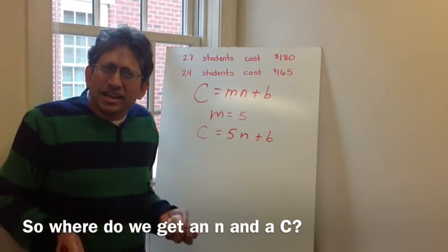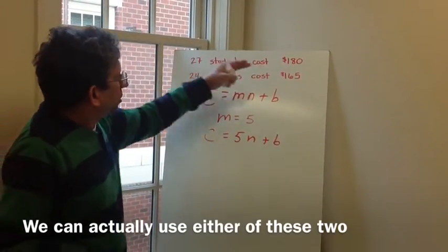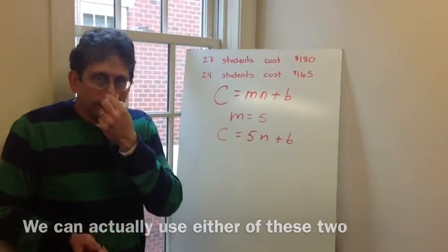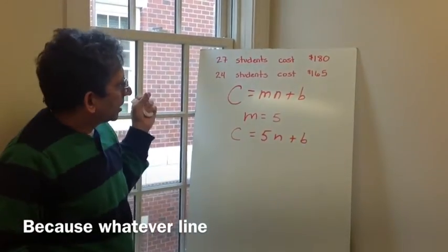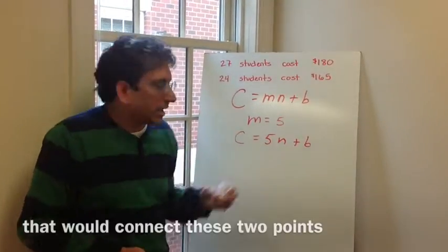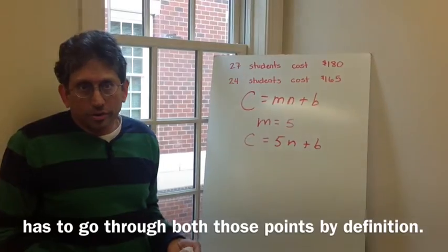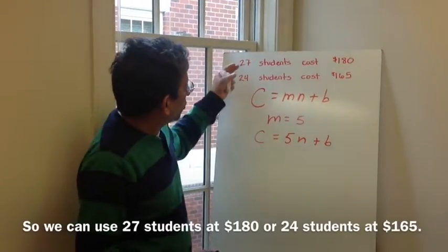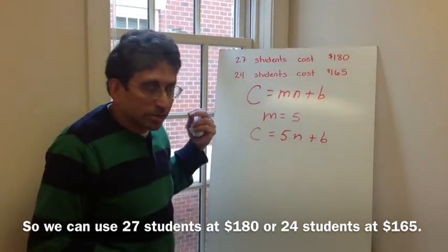So where do we get an n and a c? Well, you can actually use either of these two sets of information. Because whatever line that would connect these two points has to go through both those points by definition. We can use the 27 students and the 180, or the 24 students and the 165.